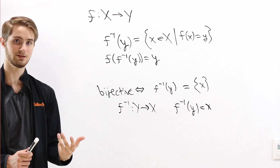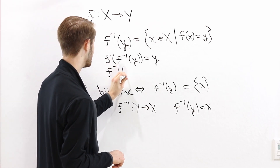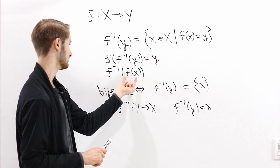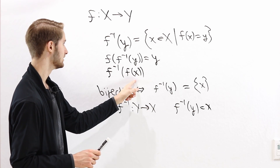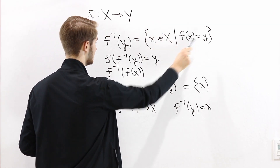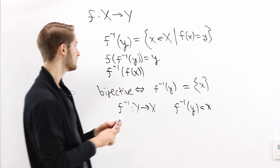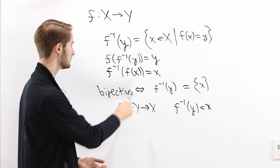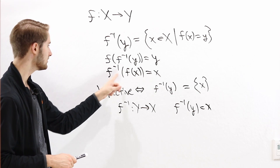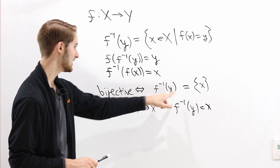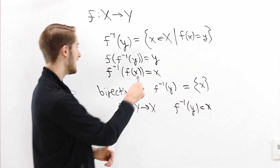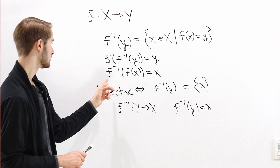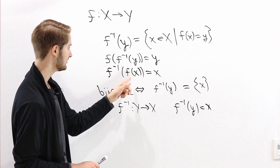We also need f inverse to be a left inverse. We need to consider what f inverse of f of x is for some x in the domain. This is the one element of the preimage of f of x. The preimage of f of x is all elements of the domain that map to f of x under f. We know x is one of those inputs, because applying f to x gives f of x. So x is in the preimage of f of x. Since this preimage has only one element, x is the unique element, and therefore f inverse of f of x equals x.